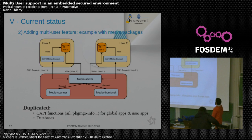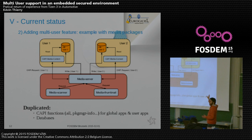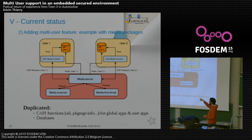Here is the media package example. What changed with multi-user is that we now have two databases in the user environment. Before, we had only one database shared by all users, and the C API for media content was not duplicated — effectively as if there was only one user. The media server manages your media library: media scanner scans for files, and media thumbnail creates miniatures of your media.